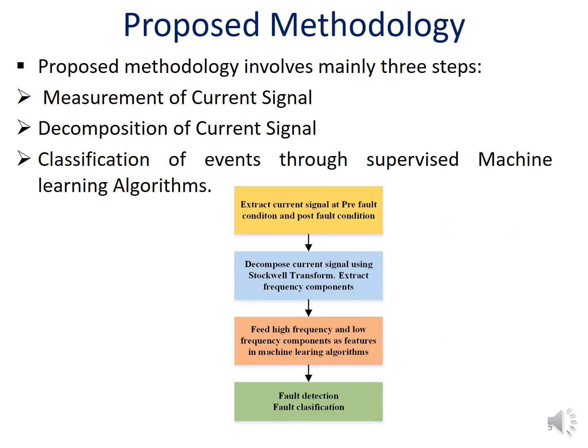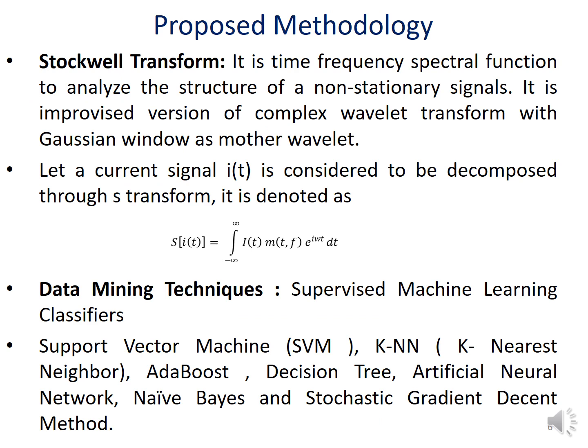The proposed methodology consists of three steps: first, measurement; second, decomposing the measured signal; and third, classification of events using a supervised machine learning algorithm. The flowchart shows: extract the current signal at pre-fault and post-fault conditions, decompose using Stockwell Transform to extract frequency components, then feed high and low frequency components as features into a machine learning classifier, and finally obtain fault detection and fault classification results. The methodology uses two methods: Stockwell Transform for signal analysis and feature extraction, and data mining techniques for classification.